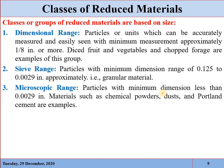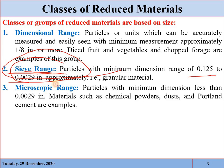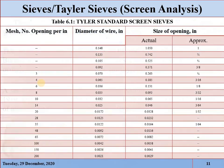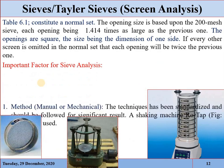We have also discussed the different classes of reduced material. Mainly we have three classes: the dimensional range, the granular range, and the microscopic range. In agricultural products, we are mostly dealing with reduced size granular products, which are mostly in the range of 0.125 to 0.0029 inches. The size is determined by sieve analysis using Taylor's screen analysis method, which we discussed in the previous lecture.